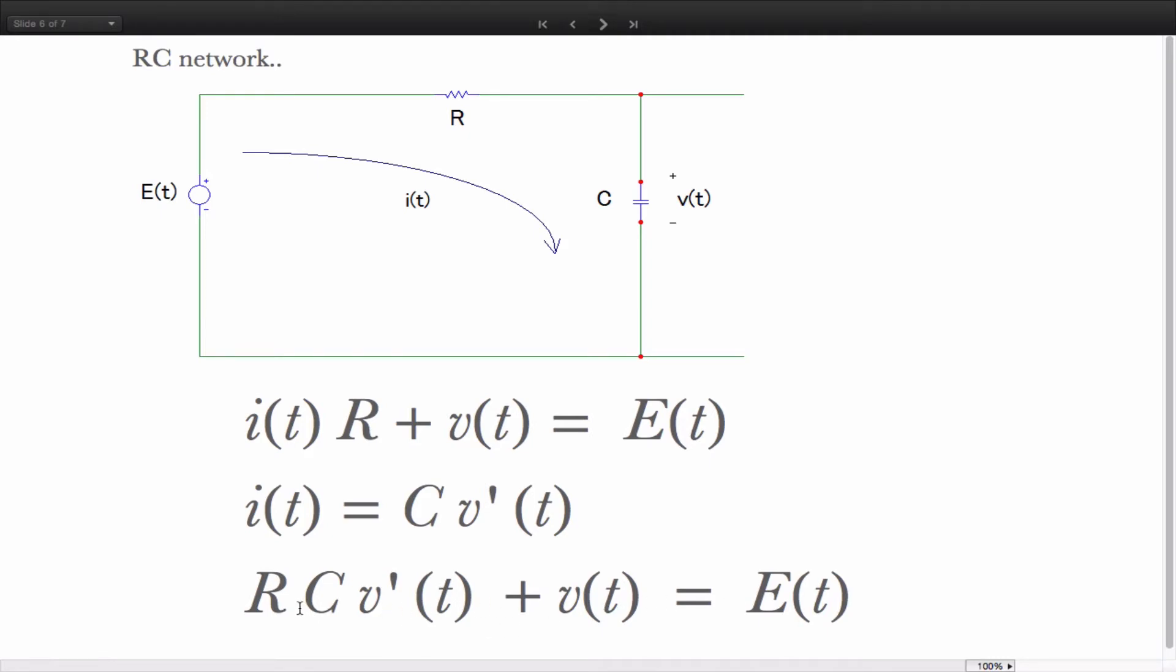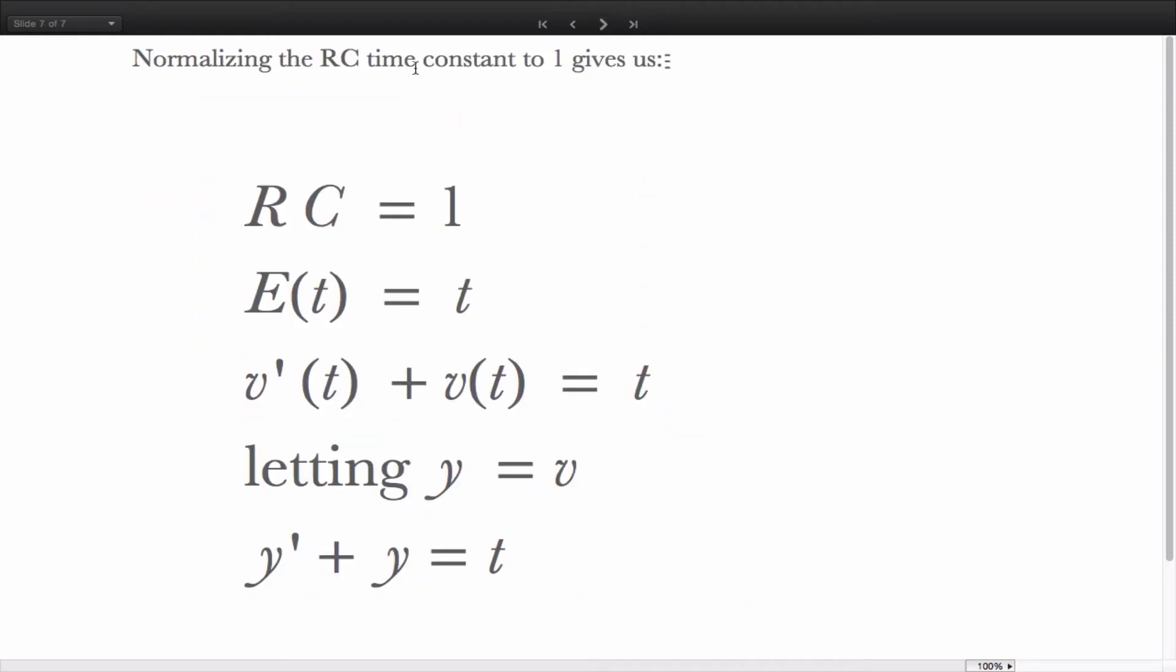First order differential equation. RC, V prime, where V is the capacitor voltage, plus V is equal to the applied voltage. What we do is we will normalize the RC product, known as the time constant, to be equal to one, and we will see what happens to the circuit when our impressed voltage is simply a ramp voltage. Making these substitutions, the equation for the RC circuit becomes V prime plus V is equal to T, and of course letting Y be equal to V, that's the equation that we'll be solving.